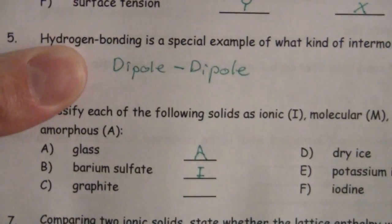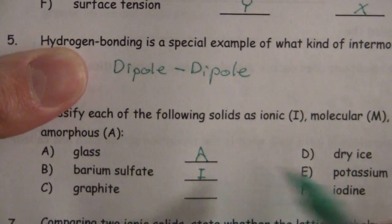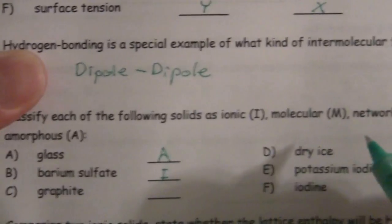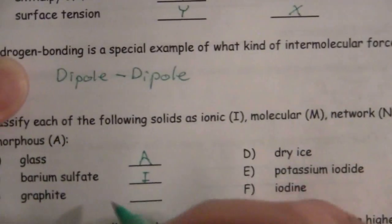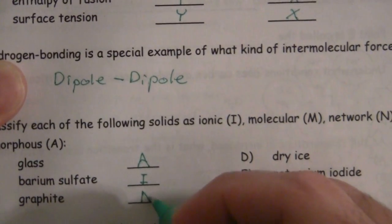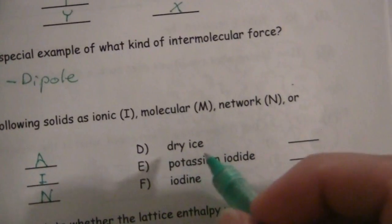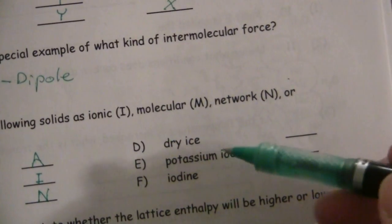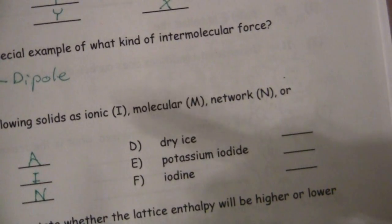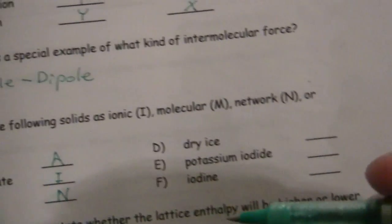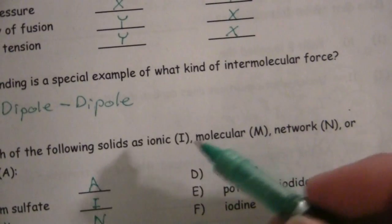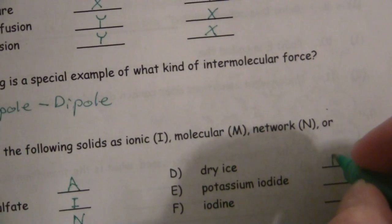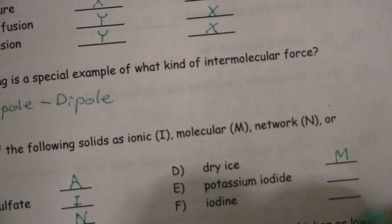Graphite, we learned that was a large plane of carbon atoms all bonded together. That is a big network, so that's a network solid. Dry ice, of course, is a common name for solid carbon dioxide and carbon dioxide is a molecule. So this would be a molecular solid, it's formed from the molecules.